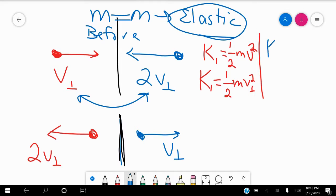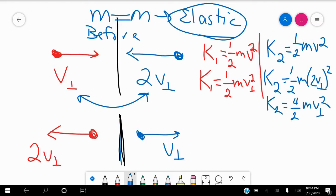So if we do it for substance two, again, we're just going to do one-half mV squared. What happens is now we have a 2V perpendicular, and we're going to square that,